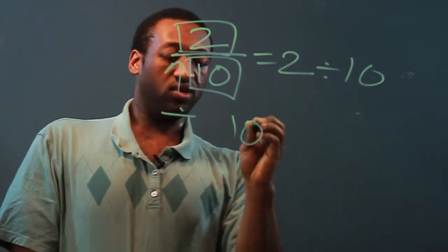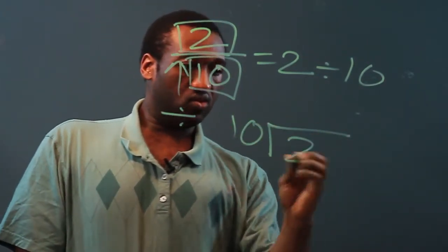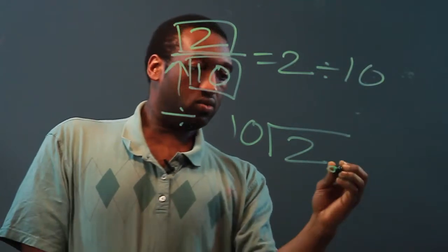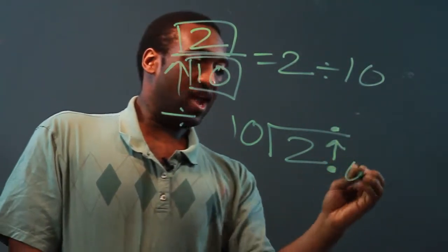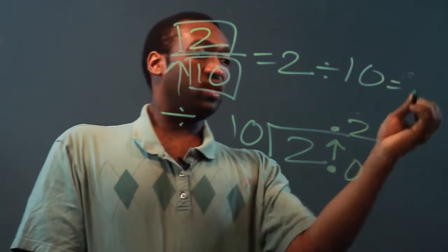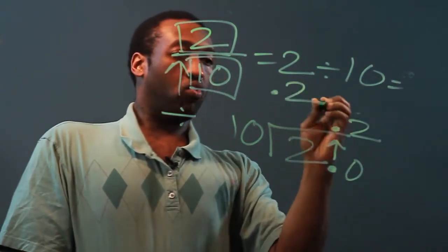So now let's do the long division, 10 into 2. 10 does not go into 2, add a decimal, bring it up into our quotient, add a 0, 10 goes into 20 twice, so the equivalent decimal is .2.